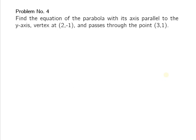The last problem: find the equation of the parabola with its axis parallel to the y-axis, vertex at (2, -1), and passing through the point (3, 1). Axis parallel to the y-axis means the axis of symmetry is vertical, so the parabola opens upward or downward. Plotting vertex (2, -1) and the point (3, 1), it is opening upward. The equation is in the form (x - h)² = 4p(y - k).